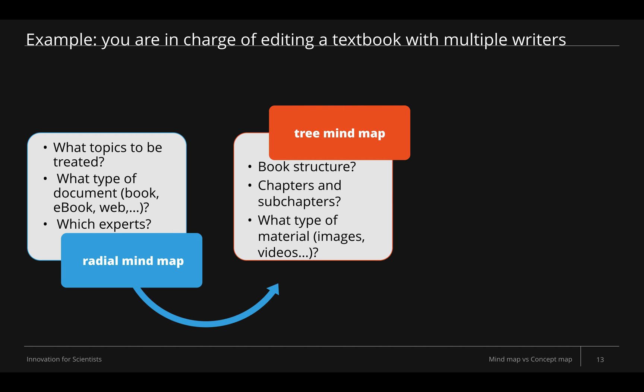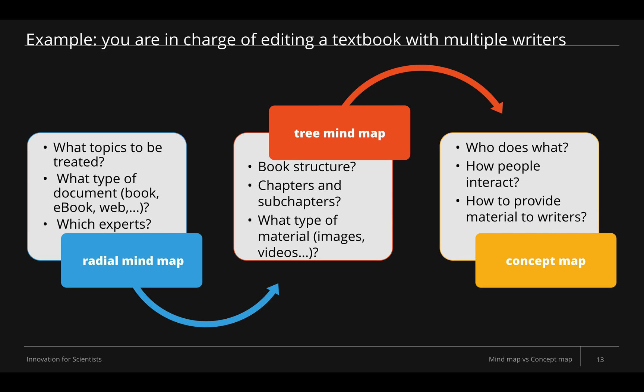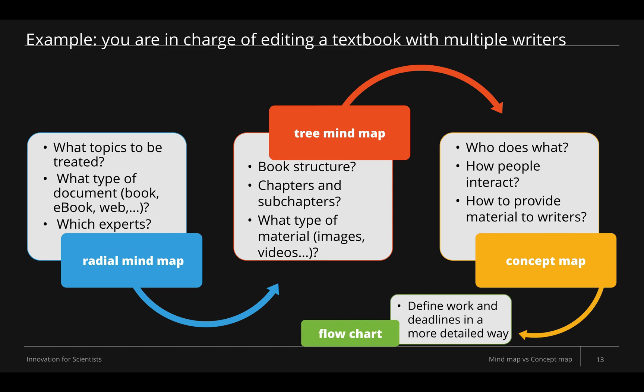Finally, when you have the structure of the book, you will decide who will do what, how people will interact and communicate, and how you will provide material to writers. This means you have to link concepts with people and take action — which is why the concept map is the better tool to finalize this work. When you have a clear view on the book structure, goals, who is in charge of what, and how material and interactions are defined, you can then define the timeline, deadlines, and milestones. At this point you move to a flowchart, which is more specific than the concept map.